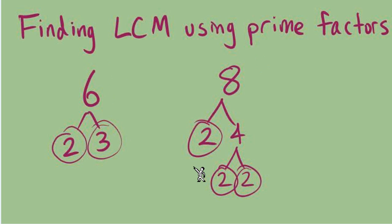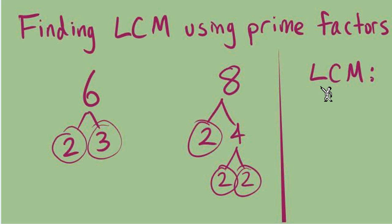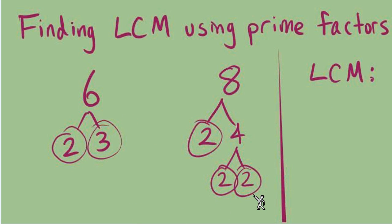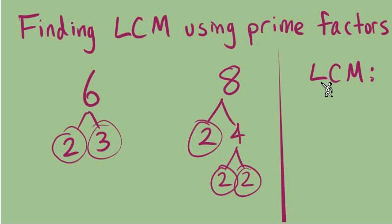Now that we have the prime factors, we're going to build our LCM. This part might seem silly, but it's helpful to remember what to do. The L reminds me of 'all' — all the factors I see will have to be used. I see some 2s and some 3s; they'll all have to be used. But there's a catch: I don't want to just count all the 2s across both trees and use that total. Instead, the CM reminds me to think about where I see the most of each factor.